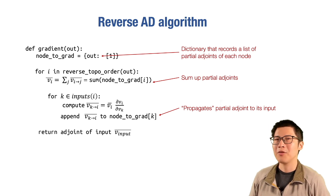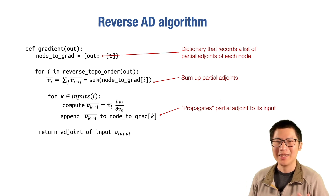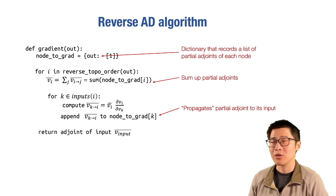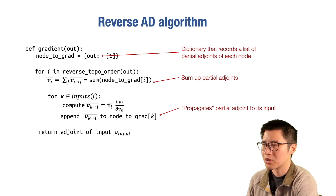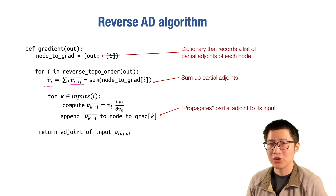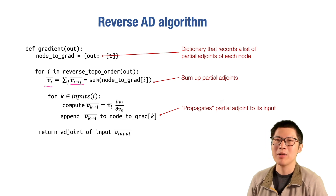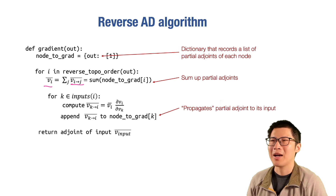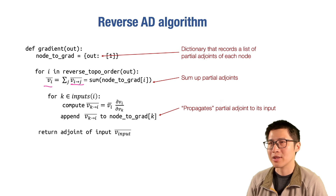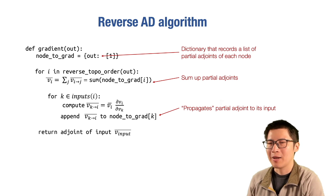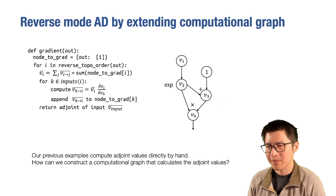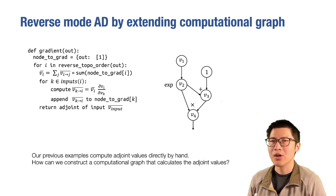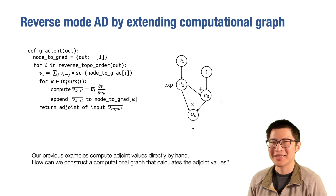Next, I'll describe a variant of this implementation. Instead of computing concrete values for each partial adjoint, we construct a computational graph for the gradient computations. Let me walk through an example. The computational graph expresses the function exp(v1) + (1 + exp(v1)) * exp(v1). To run reverse mode AD, in the first step we compute the adjoint of v4 — we know v4's adjoint is 1, so we create a graph node representing that constant.